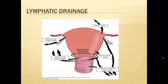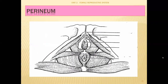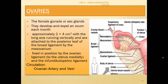Lymphatic drainage of the uterus: from the round ligament it goes to the external iliac lymph nodes; above the round ligament or above the tubes it goes to the aortic lymph nodes; around the surface it drains to paracervical, sacral, and internal iliac lymph nodes. Nerve supply: sympathetic motor from T5-T6, sensory from T10-L1; parasympathetic supply from pelvic nerves S2, S3, S4, ending in the ganglia of Frankenhauser.